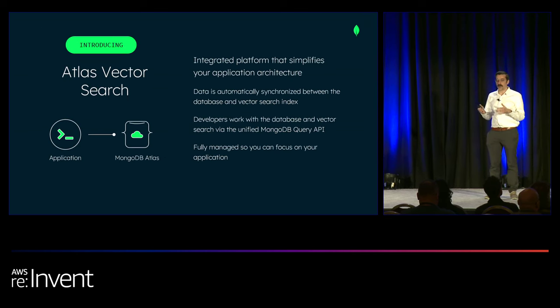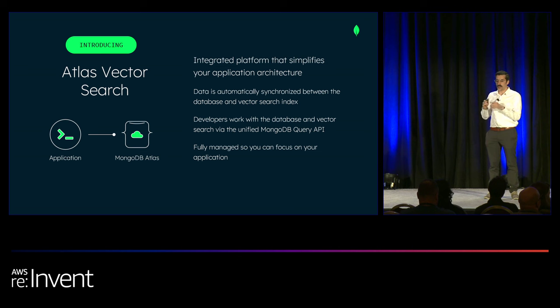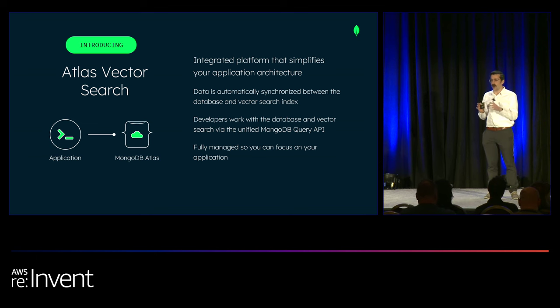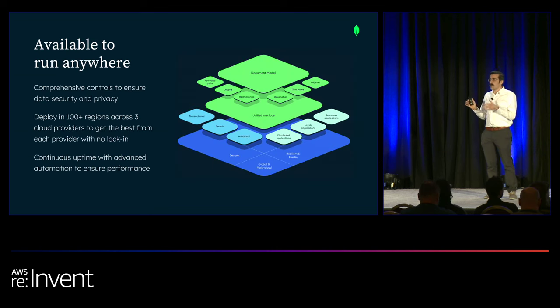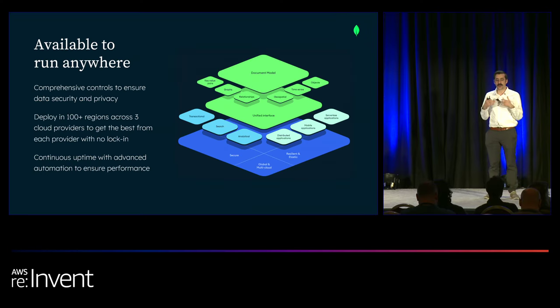To sum it up: with Atlas Vector Search, your application communicates directly with MongoDB Atlas. Data is automatically synced between the database and your vector search index. As a developer, you work with the database and vector search via a single unified query API with one set of drivers and tools, and all of this is fully managed behind the scenes. Atlas can run anywhere, has comprehensive security controls and privacy, can be deployed in 100-plus regions across three different cloud providers, and gives you continuous uptime with advanced automation and the performance you need.